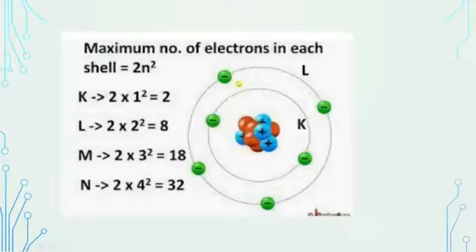If you go to the second shell, the formula is 2 times 2². 2² means 4, so 2 times 4 equals 8 atoms. So if you see here, it is 8 atoms. So like that it will go: 2, 8, 18, 32.